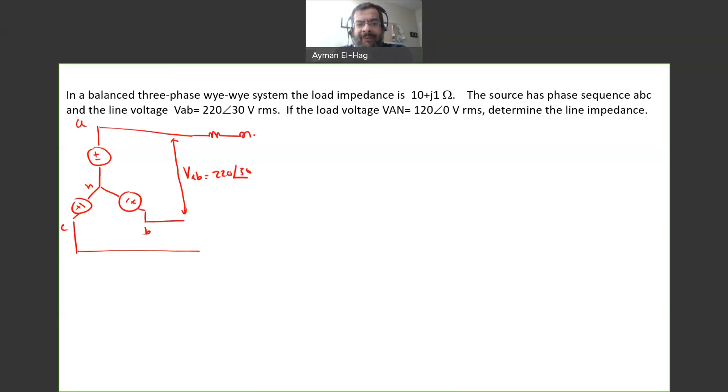Then in the line we have an impedance, we call it Z-line. And this is my unknown. And since we work only in balanced system, so each line will have Z-line. And now at the end we have the load.